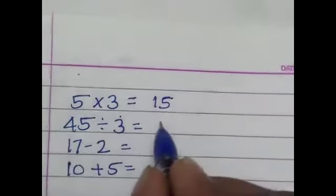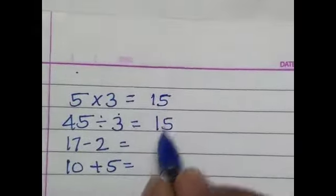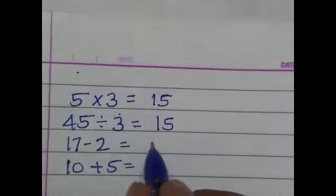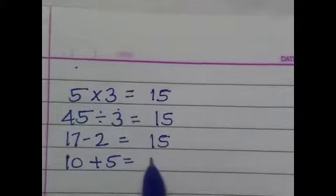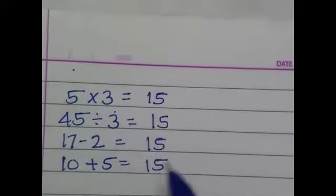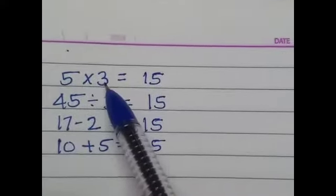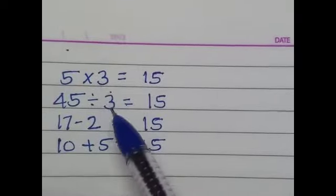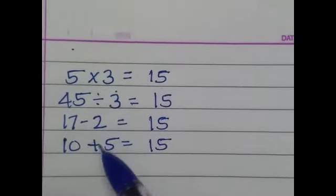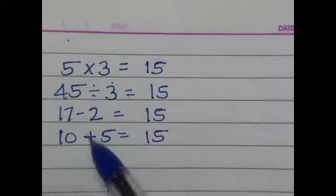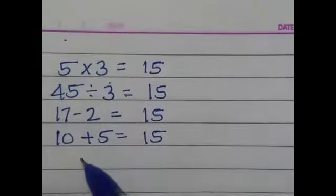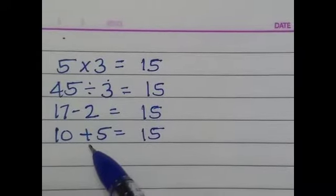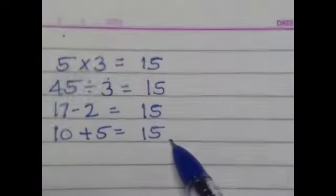45 divided by 3 is the answer 15. 17 minus 2 is the answer 15. And 10 plus 5 is the answer 15. First, it is mathematical operation. So, this is multiplication, it is divided, it is subtraction, and it is plus.